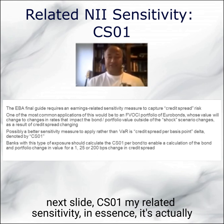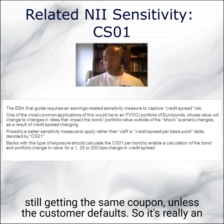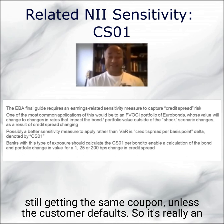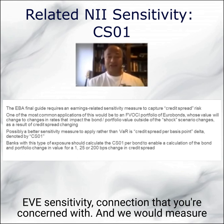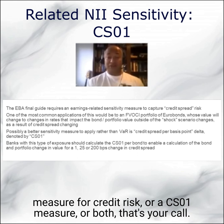As I say on the next slide, CS01 — my related sensitivity — is actually an EVE sensitivity rather than an NII sensitivity, because you're still getting the same coupon unless the customer defaults. So it's really an EVE sensitivity assessment, and we would measure that with a credit spread per basis point. You may use a value at risk measure for credit risk, or a CS01 measure, or both — that's your call.